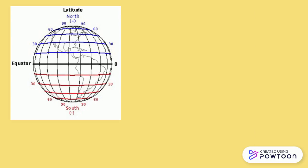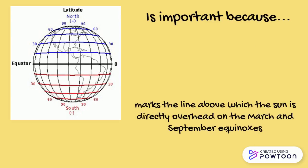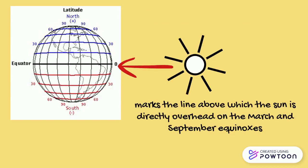Well, the equator, an imaginary line, is an important line on the Earth's surface. It marks the line above which the Sun is directly overhead on March and September equinoxes.